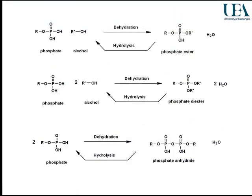Similarly with phosphate esters — the hydrolysis of phosphate esters and the hydrolysis of phosphate anhydrides are typical biological processes. They're all the same classes of structures.